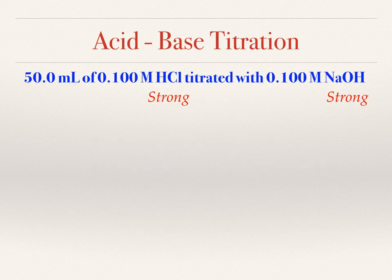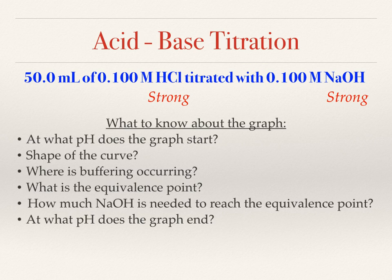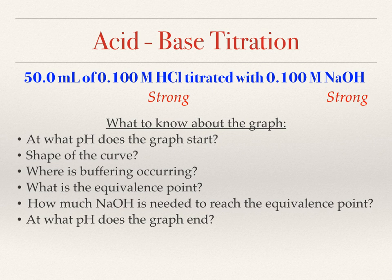Let's look at a neutralization or titration with sodium hydroxide and HCl, both strong, where the concentrations are the same. When looking at the graph, you might want to know at what pH the graph starts, the shape of the curve, where buffering is occurring, where the equivalence point is, how much sodium hydroxide you'd need to reach that equivalence point — since NaOH is the titrant in your burette — and at what pH the graph ends. Pause the video and sketch your own graph to see how many of these points you can find.